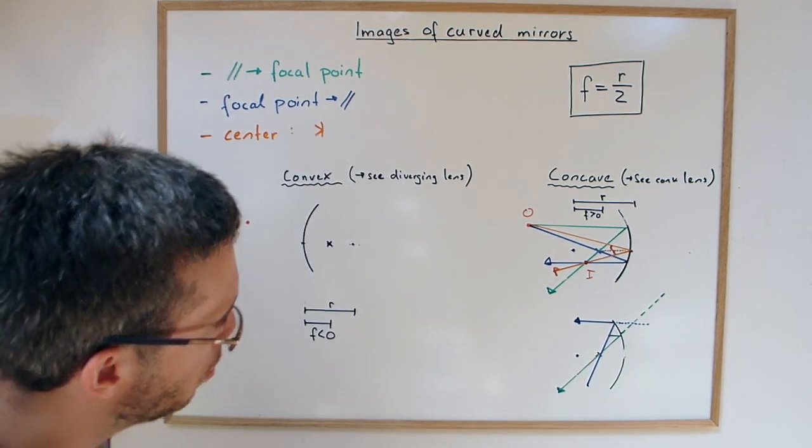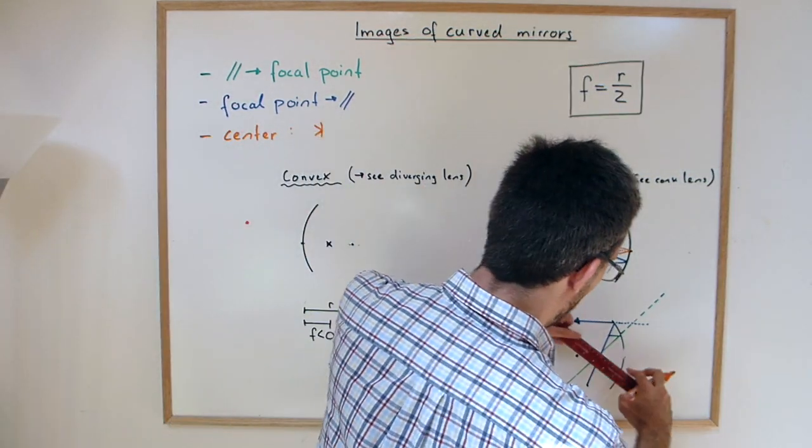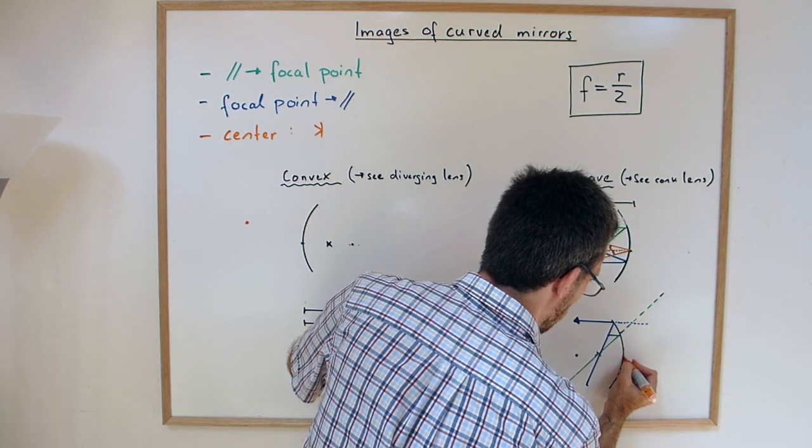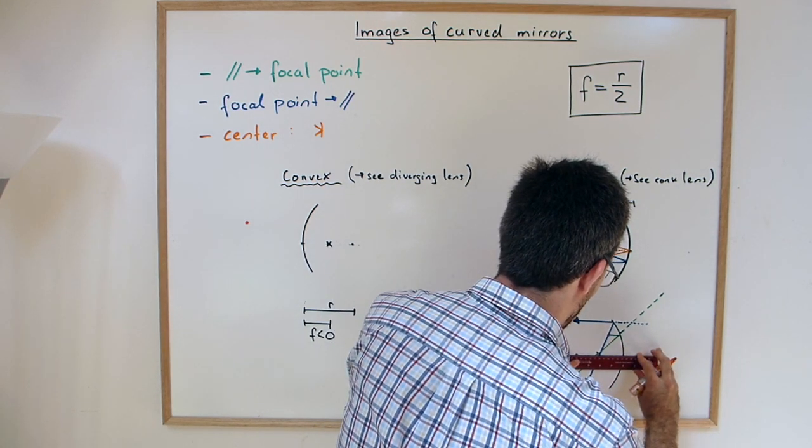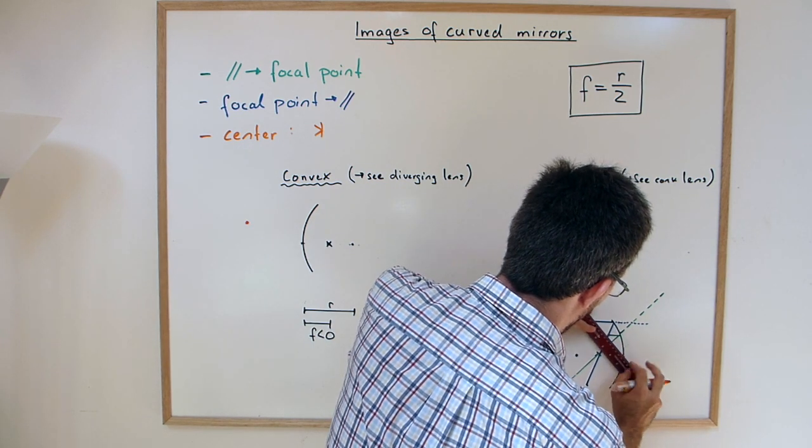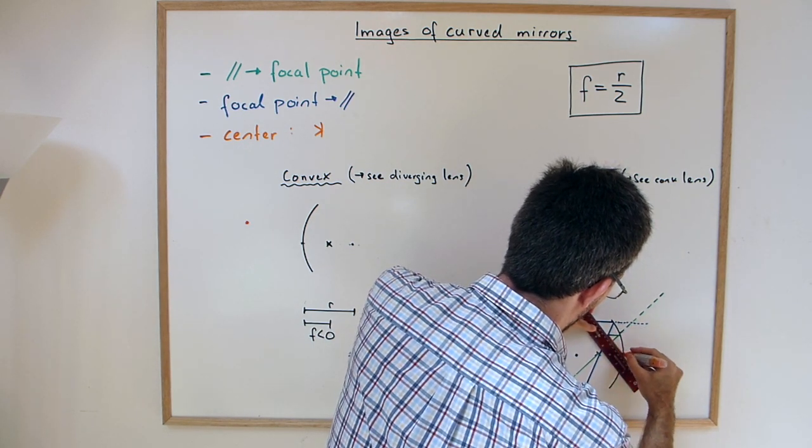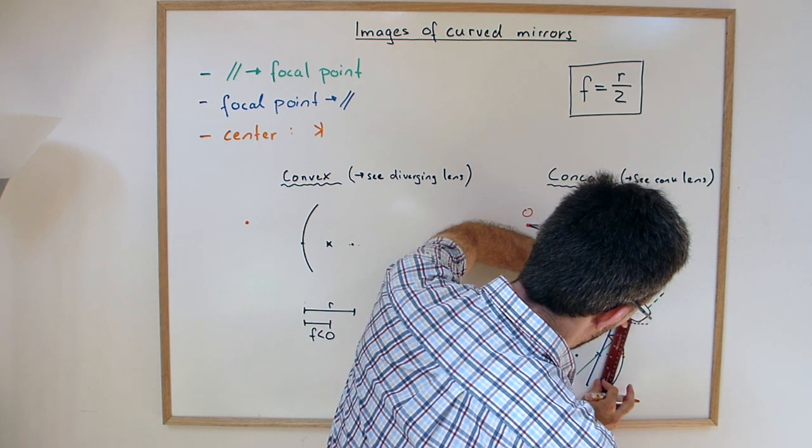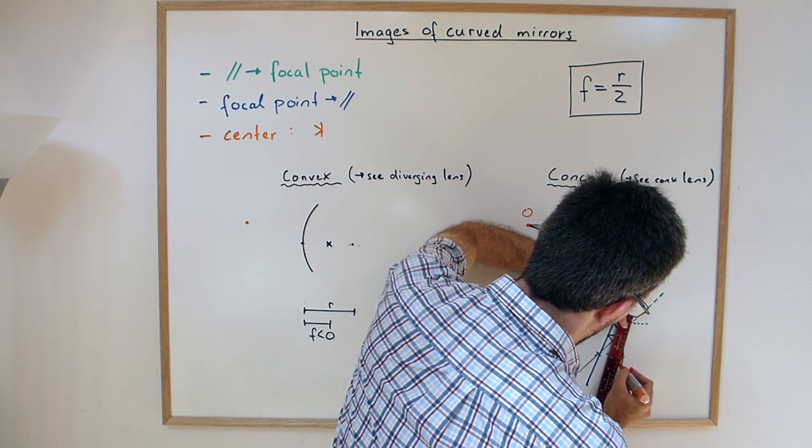And then the last one that goes through the middle. The middle was actually here. So I have incoming angle, this outgoing angle.